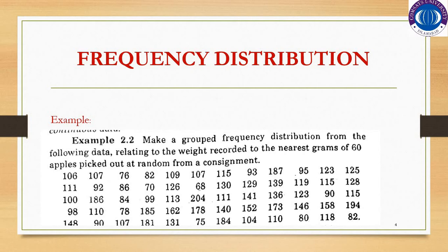In this part, we will apply those methods to a numerical example. The example asks us to make a grouped frequency distribution from the following data, relating to the weight recorded of 50 apples picked out at random. As you can see, this is continuous data because weight is continuous, and we have to make the frequency distribution.